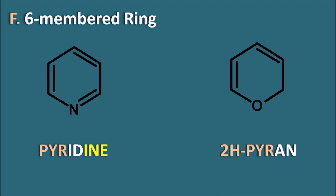In pyrone, the second position is saturated because oxygen has a valence of only two, so the second position must be saturated. We indicate the point of saturation with its position and the letter H. So 2H indicates the second position is saturated — this is 2H-pyrone. Here we are not following any particular suffix, so these should be known by their common names like pyridine and pyrone.